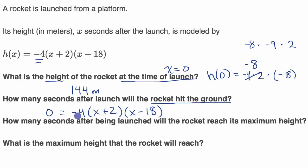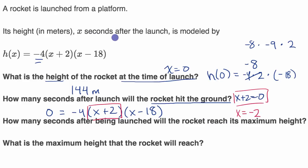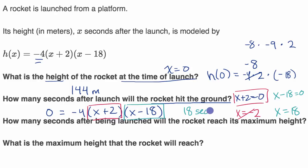If you have the product of three different things being equal to zero, at least one of those three things must be equal to zero. Well, negative four can't be equal to zero. So either x plus two equals zero, giving x equals negative two — but a negative x means before the launch, so we rule that out — or x minus 18 equals zero. Adding 18 to both sides gives x equals 18. So 18 seconds after launch, the height is zero: the rocket has hit the ground.